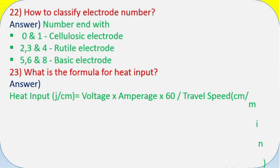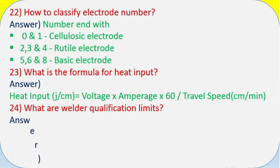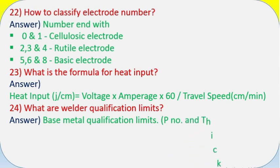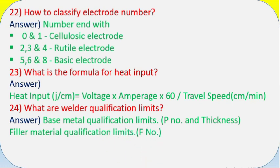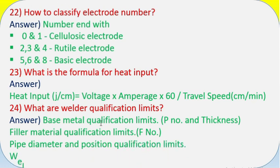Question 23: What is the formula for heat input? Answer: Heat input J/cm equals voltage times amperage times 60 divided by travel speed cm/min. Question 24: What are welder qualification limits? Answer: Base metal qualification limits - P number and thickness. Filler material qualification limits - F number, type of pipe diameter and position qualification limits, weld metal thickness qualification limits.